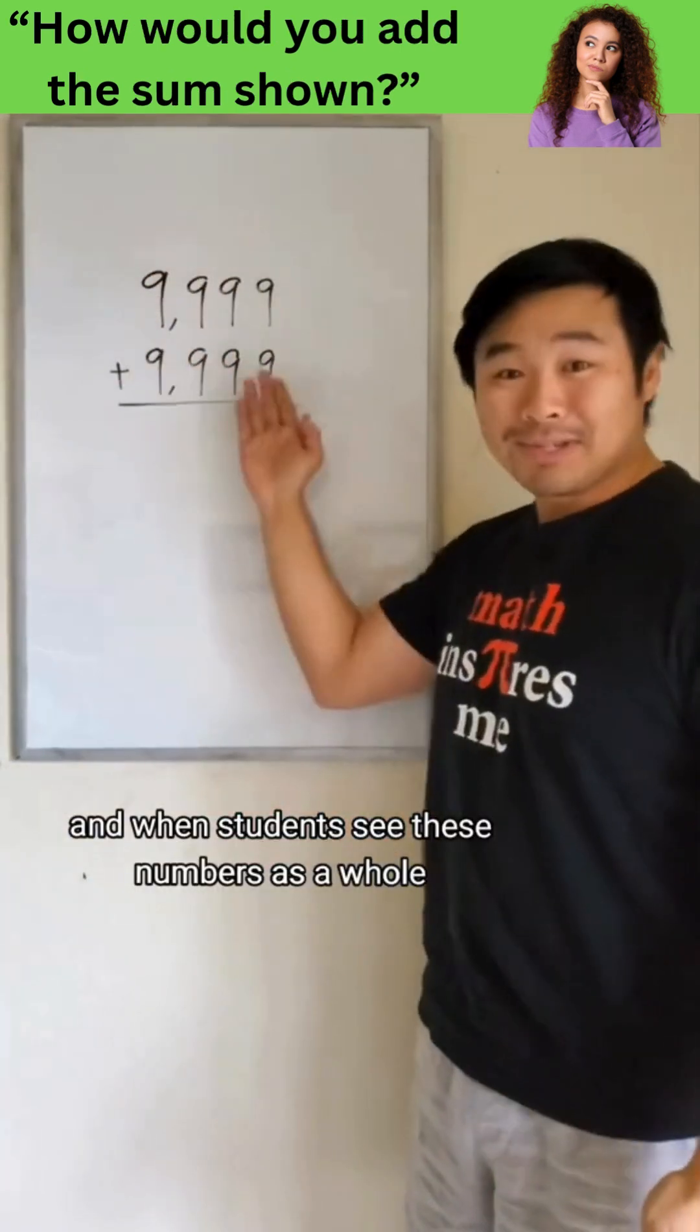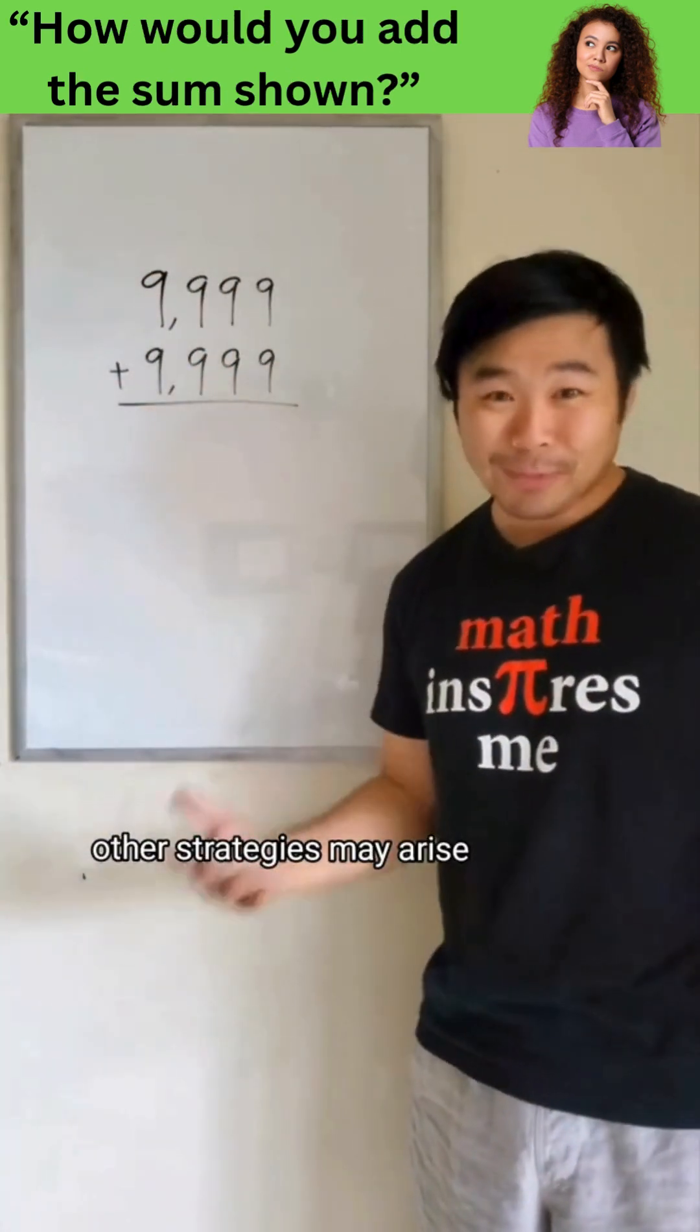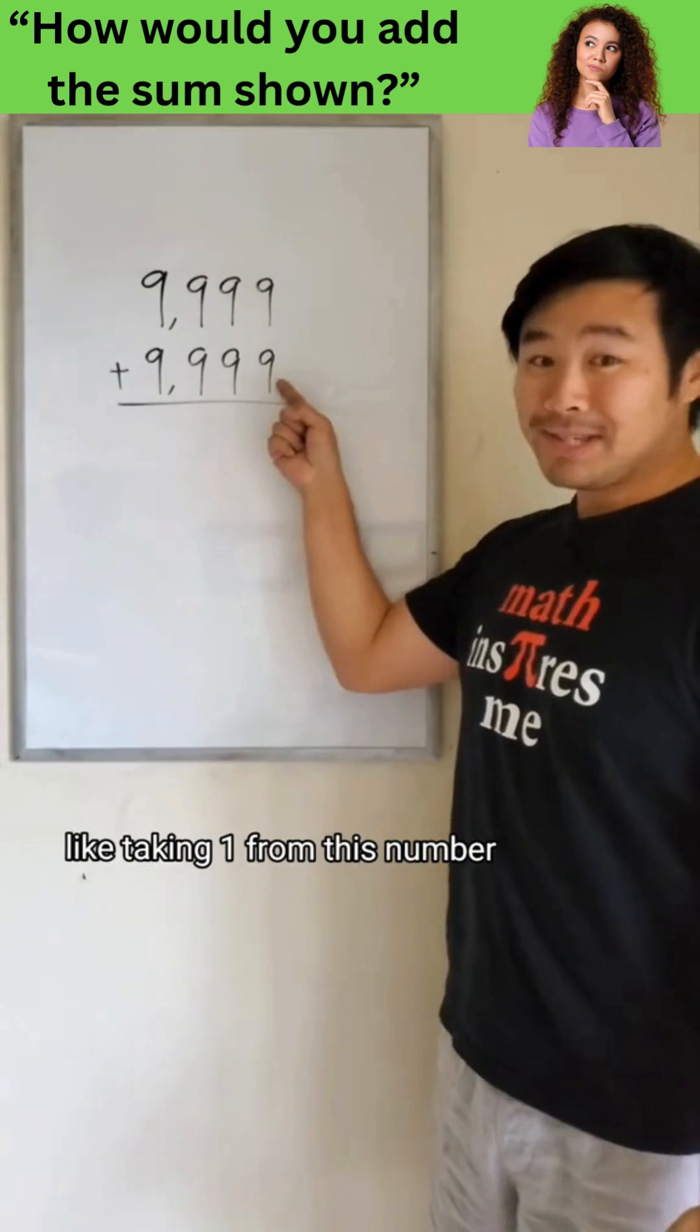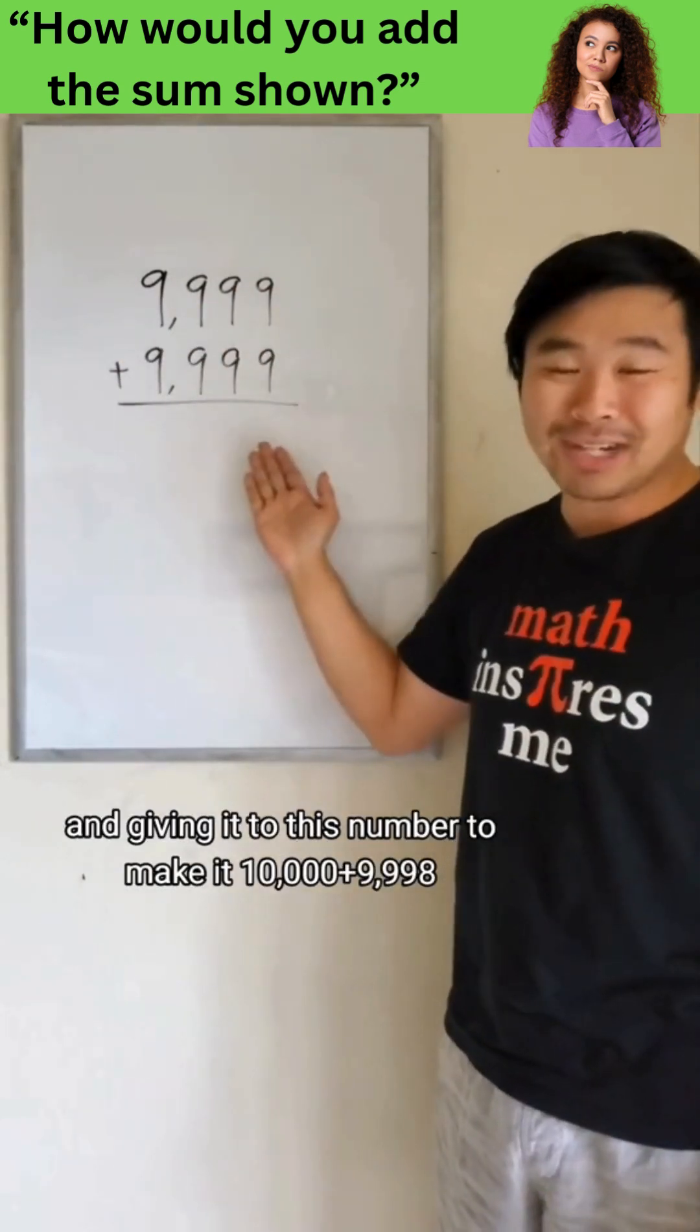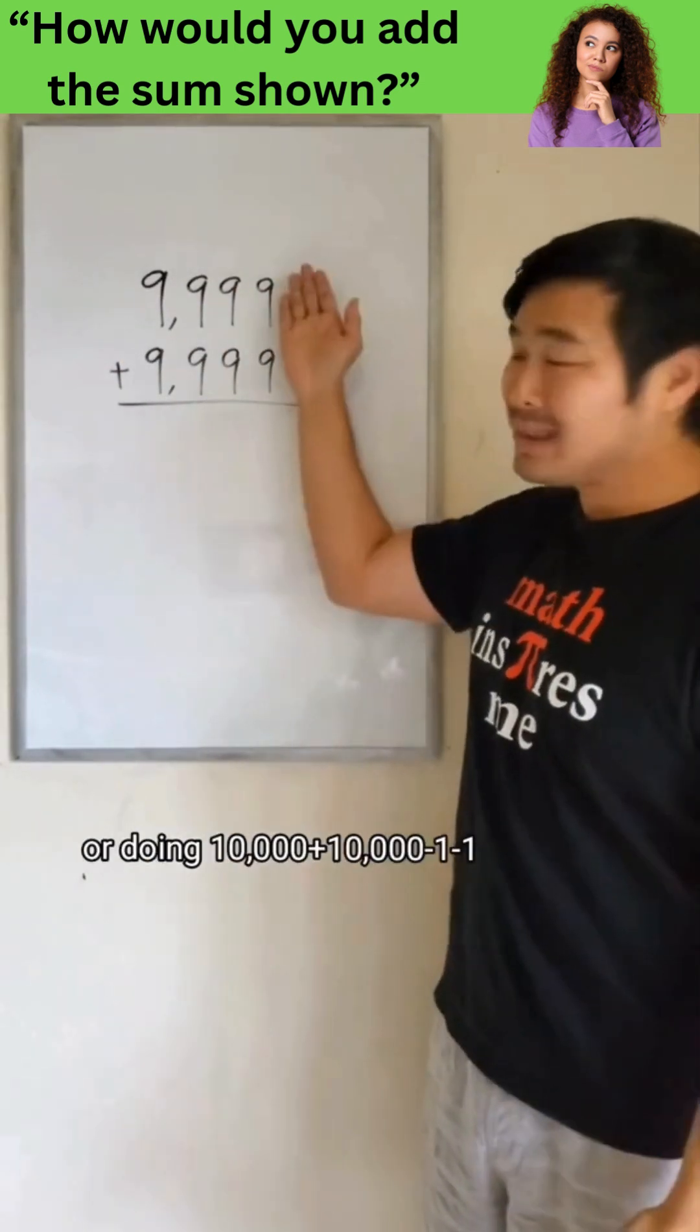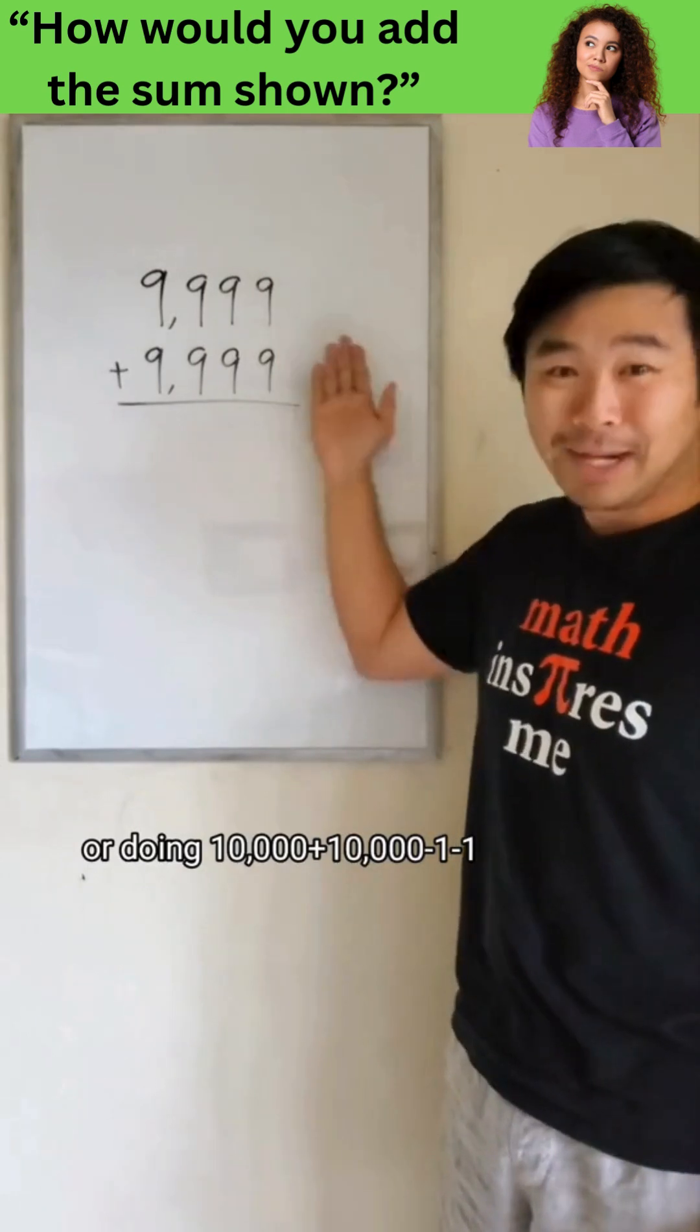And when students see these numbers as a whole, other strategies may arise, like taking one from this number and giving it to this number to make it 10,000 plus 9,998, or doing 10,000 plus 10,000 minus 1 minus 1.